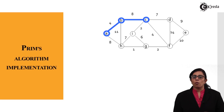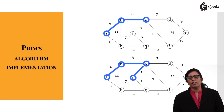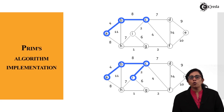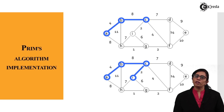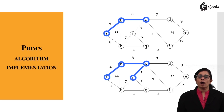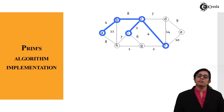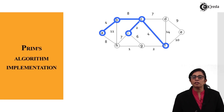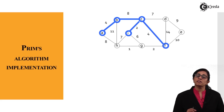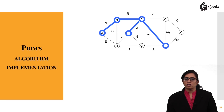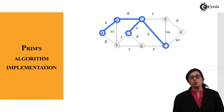From C we find how many edges are going out: the values are 2, 4, and 7. Since 2 is the minimum edge, we choose C to I with value 2. Then from I we see values 6 and 7, but from C there is another edge with value 4. Since 4 is less than 6 and 7, and does not form a cycle, we choose C to F with value 4.